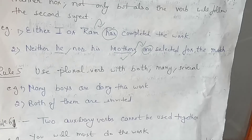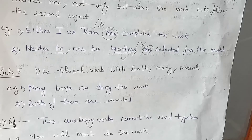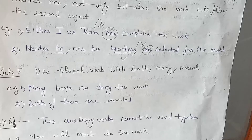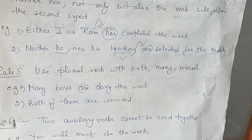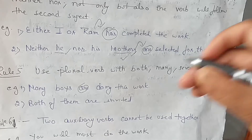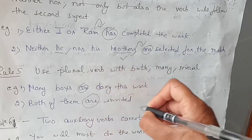Rule number five: use a plural verb with 'both,' 'many,' and 'several.' When you have both, many, or several, you will use a plural verb. For example: 'Both of them are invited.' The plural verb 'are' is used here.